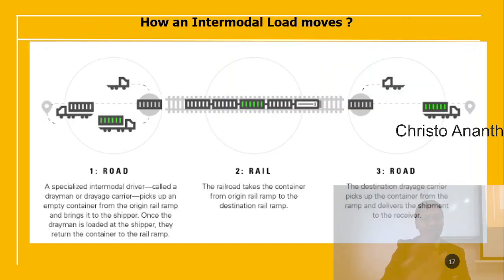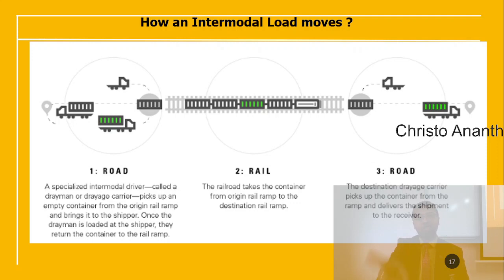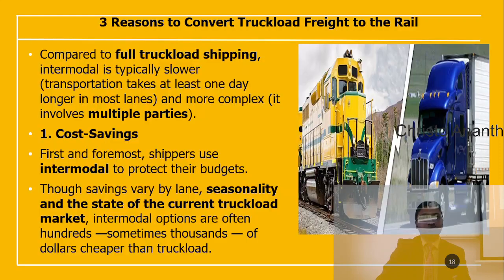To recap the road-rail-road process: a specialized intermodal driver (drayman) picks up the container, it is loaded at the shipper, returned to the rail ramp, the railroad takes it from the origin ramp to the destination ramp, and then the destination drayage carrier picks up the container and delivers it to the receiver. There are three reasons to convert truckload freight into rail: cost savings, sustainability, and capacity.